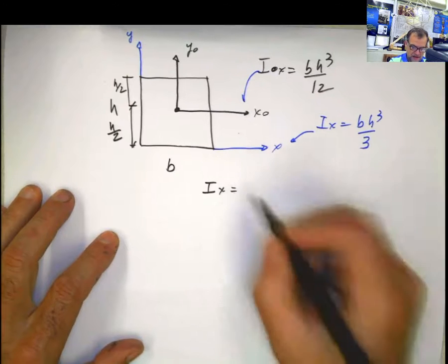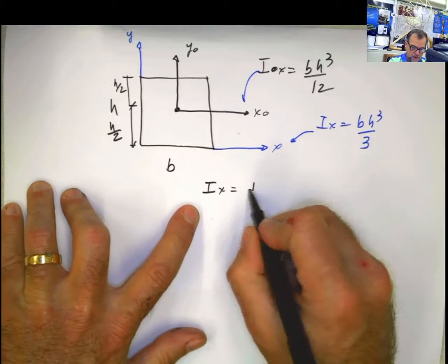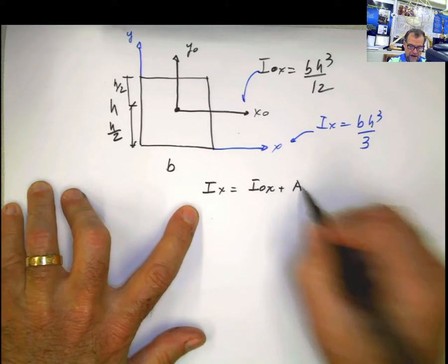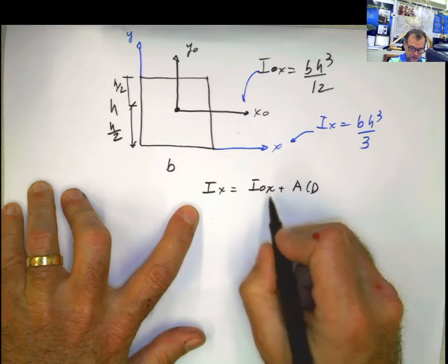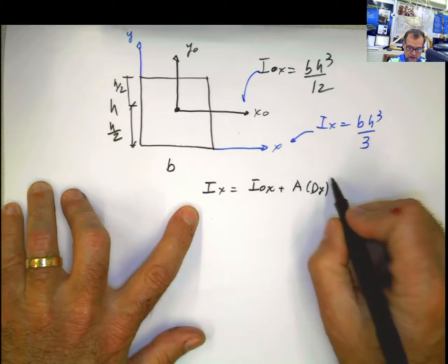It says that Ix, the moment of inertia with respect to any arbitrary axis, is going to be equal to the moment of inertia with respect to the centroid plus the area multiplied by a distance. Because I'm measuring in x this time, the distance is going to be in y squared.